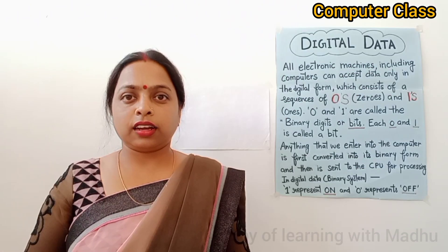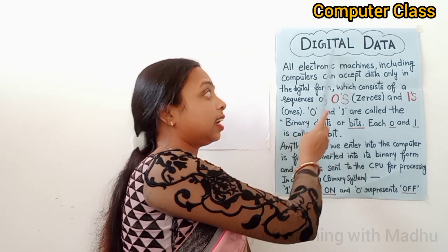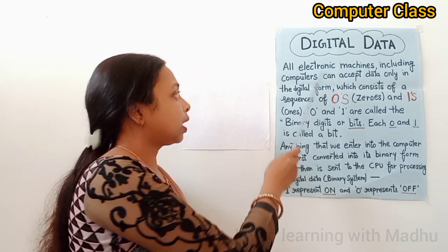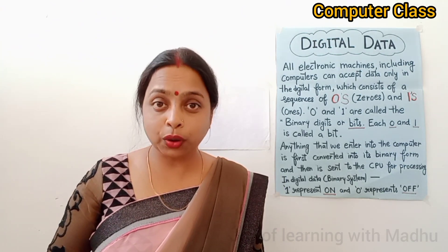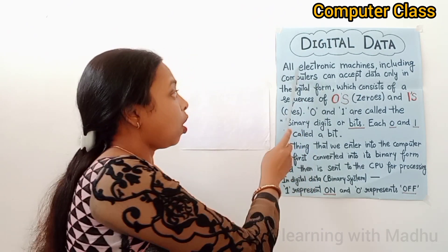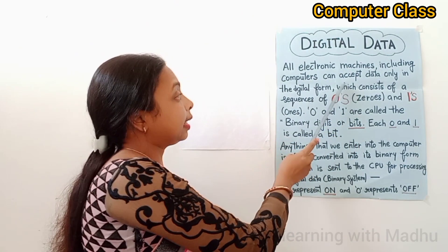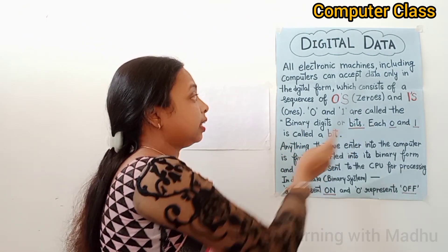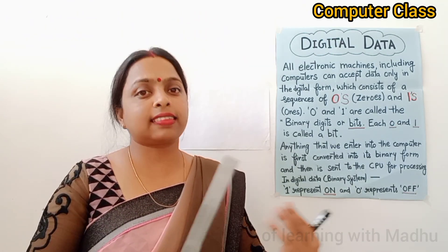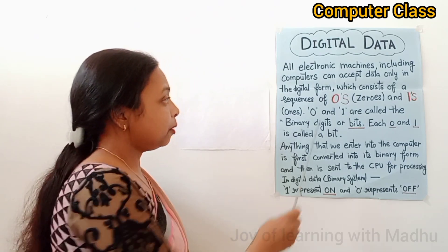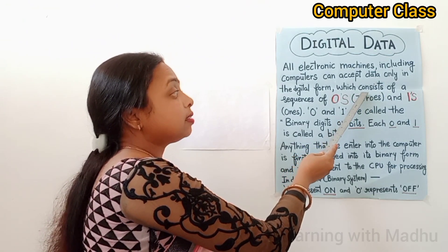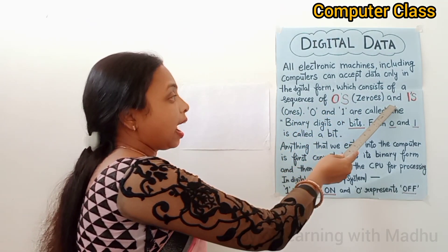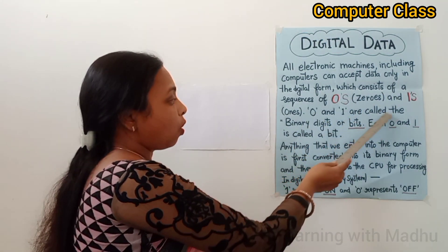Now let's talk about the next topic: digital data. All electronic machines, including computers, can accept data only in digital form. Digital data consists of sequences of zeros and ones. Zeros and ones are called the binary digits.